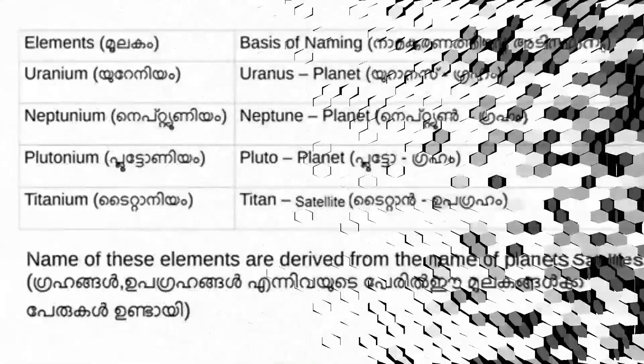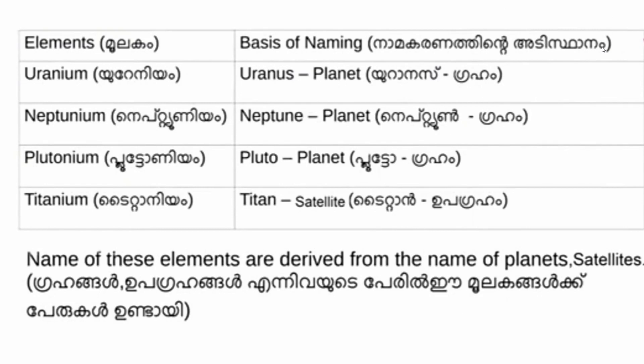Let's take a look at this basis of naming. Uranium is named after Uranus, Neptune after Neptune, Pluto after Pluto, Titanium after Titan, which is a satellite. These elements are derived from the names of planets or satellites.